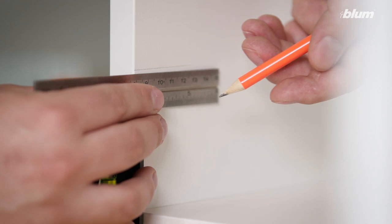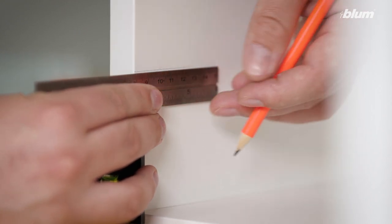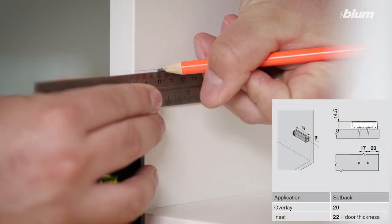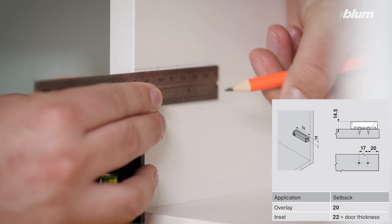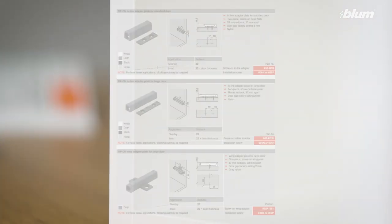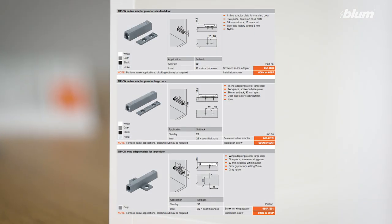As you can see, I've made a mark on the side panel where a handle would normally be installed. Since I'm using a standard adapter plate for this application, I'll make a mark at 20 mm and then another mark 17 mm behind that. The setback measurements for each type of adapter plate can be found in our concealed hinge brochure.